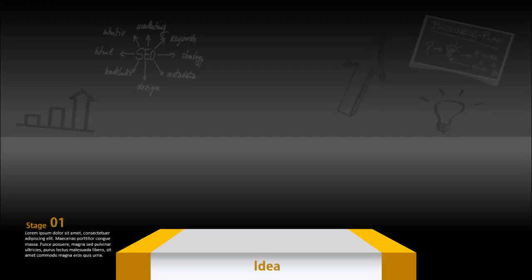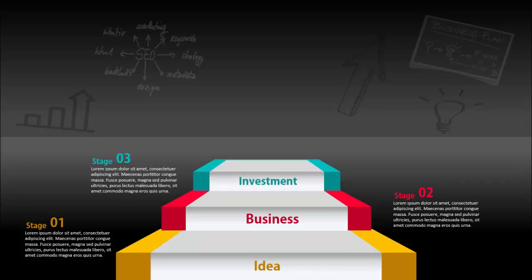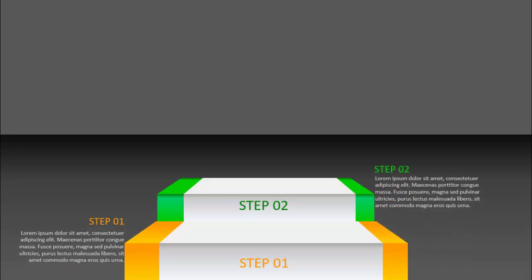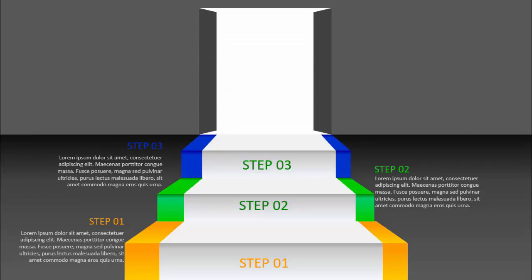Hello and welcome to my YouTube channel PowerPoint University. In this tutorial I'm going to show you a success steps or a success ladder infographic slide. When I click it will show you the first step which is the idea, then you can add some details. That is stage one, then you get the second step which is Business, then Investment, and the last is Success and the door opens. This is the four-stage success slide. You can also make it three steps.